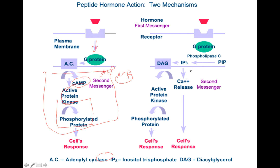The other pathway differs in that IP3 causes calcium to be released. You still get the G-protein, but there's no adenylate cyclase. The calcium binds with calmodulin for an additional response. Phosphodiesterase inactivates cyclic AMP, so you need constant stimulation to keep the effect happening; otherwise the cyclic AMP will be inactivated.